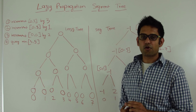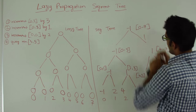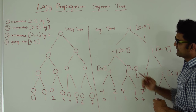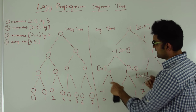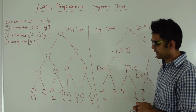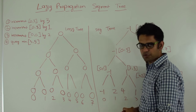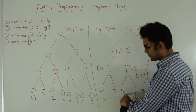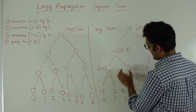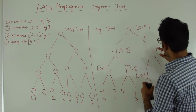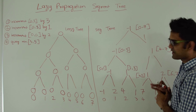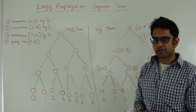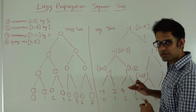So if lazy propagation was not in place, let's see how this would work. We would come to 0 to 7 and since 0 to 3 has an overlap we go in both directions. We reach the leaf nodes, increment each by 3, and take minimums back up. As you can see, when lazy propagation is not in place, for any update we go all the way to the leaf nodes.